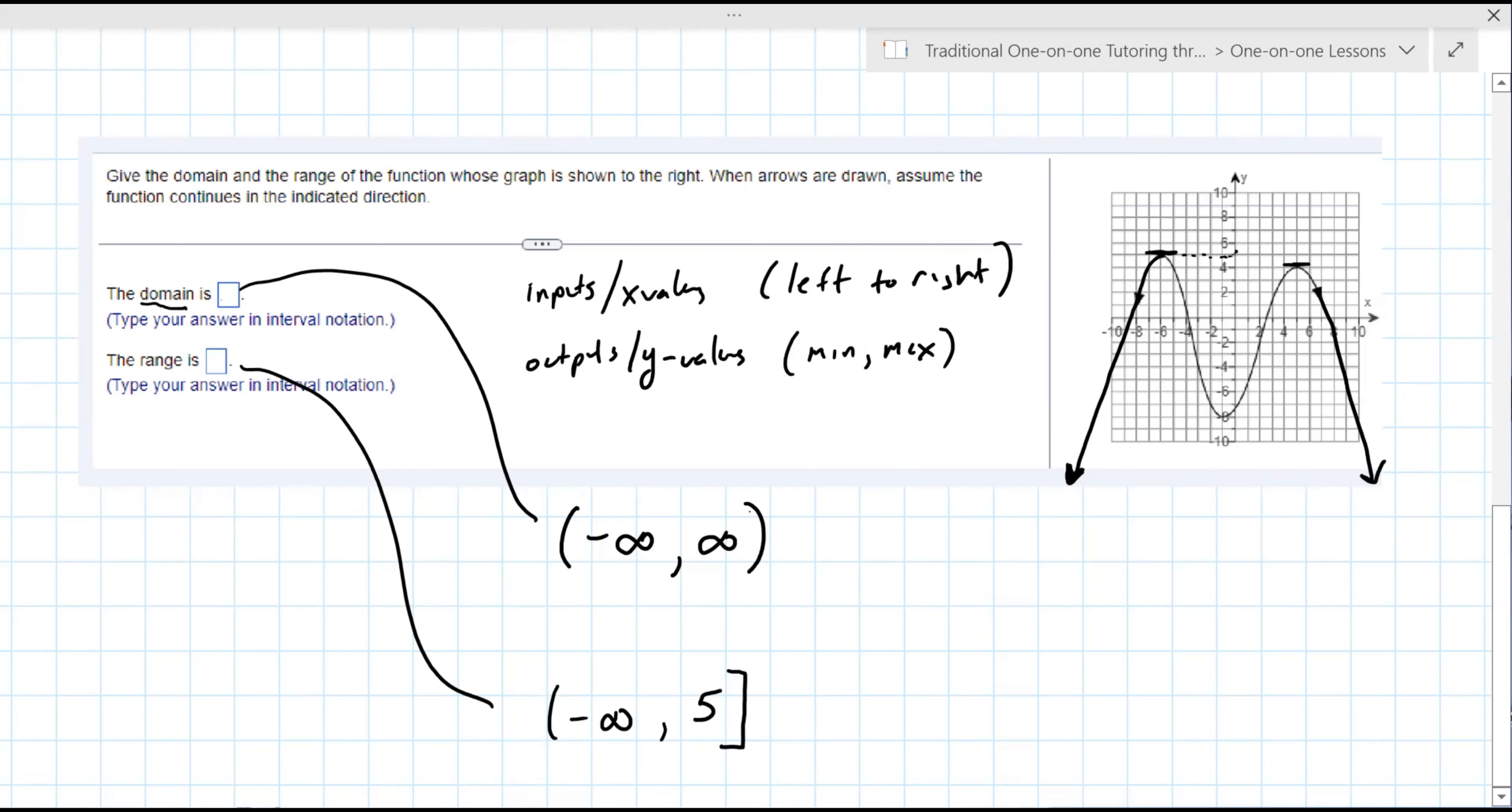So that bracket means it includes it. The parentheses means excludes, kind of up to but not including that point there.